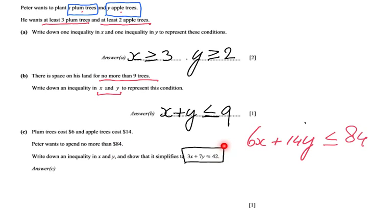Show that it simplifies to this inequality. Is there a common factor that has been taken out? Yes. So six divided by two is three. Fourteen divided by two is seven. And eighty-four divided by two is forty-two. So you could say divide by two is going to give me 3X plus 7Y smaller or equal to forty-two. And that is that.